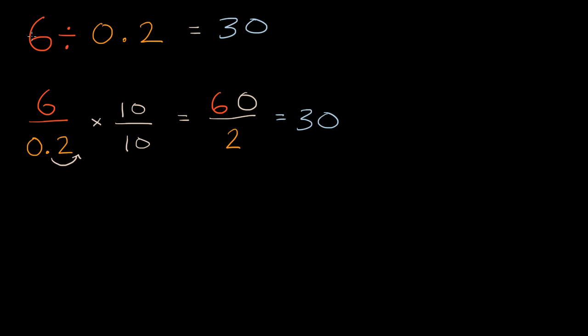Now, another strategy is you could have thought of all of these numbers in terms of tenths. You could have said this is 60 tenths divided by 2 tenths. Well, I have 60 of something, and if I were to divide it into groups of 2 of that something, I would have 30 groups. That's going to be equal to 30.